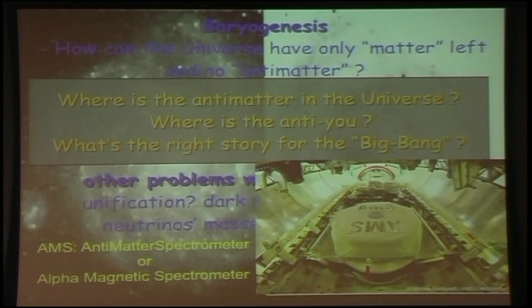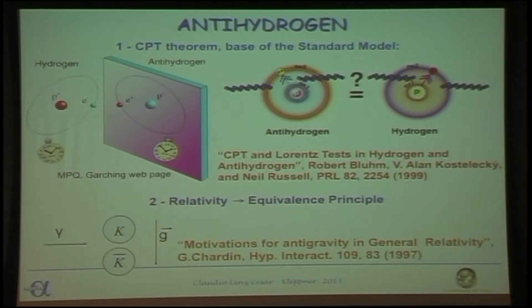Sam Ting, a professor from MIT, led this experiment to look for anti-alpha particles in a satellite. Now they are in the second version, this AMS-2, and it's sensitive to a part in 10 to the 9. So they can detect one anti-alpha particle for 10 to the 9 alpha particles. And the result from the first one was zero. There's no anti-alpha up there. So essentially, where is the antimatter?